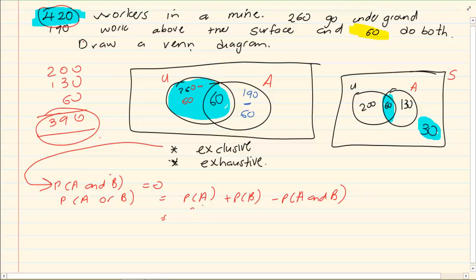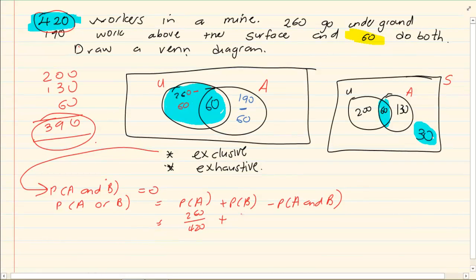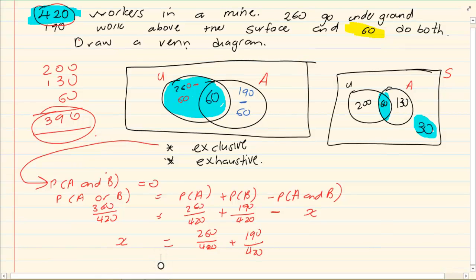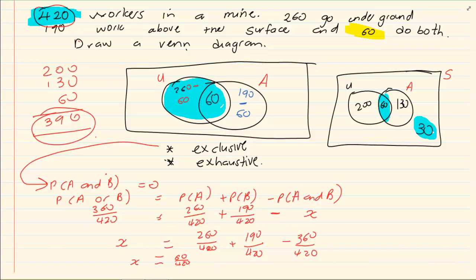So P of A is 260 over 420. P of B is 190 over 420 minus x. Remember we still want to prove that it is either equal to 0 or it is not. Now what do we have for P of A or B? What do we have for the entire thing? Now if I get my x alone, I am going to have 260 plus 190 minus 360 is going to equal to my x. This here gives me that x is equal to 60 over 420. That tells me these events are not exclusive.